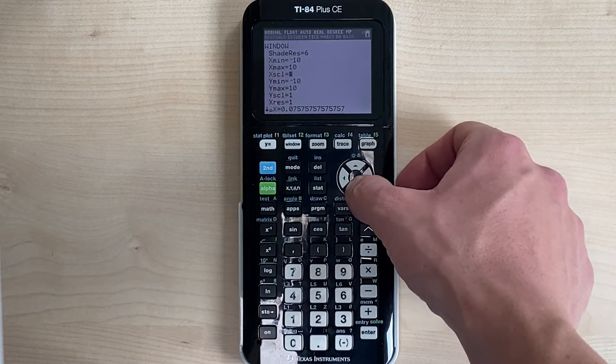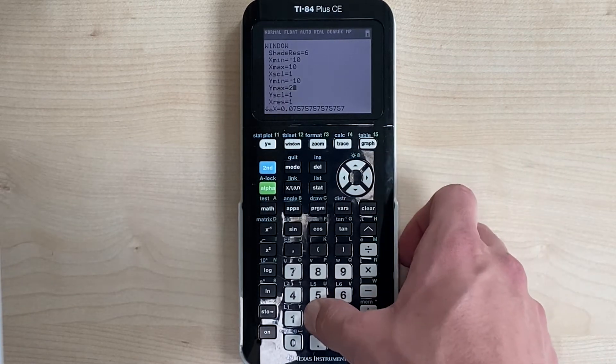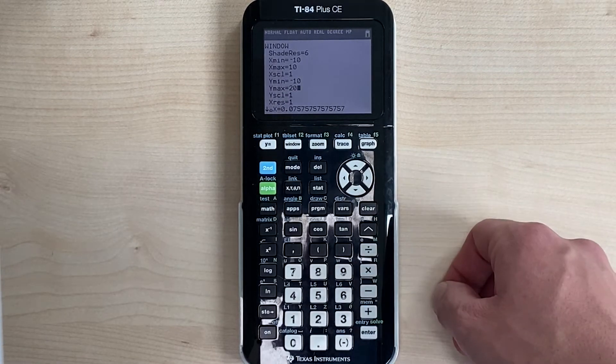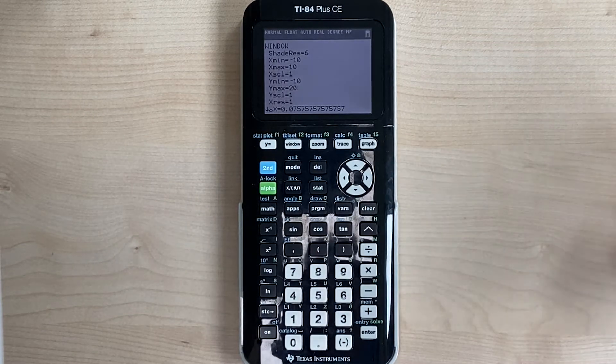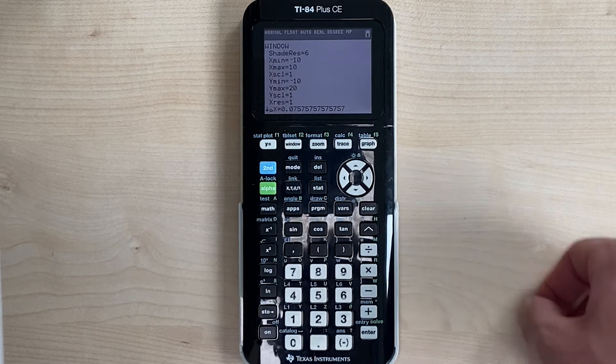So let's go down. Right now, y-max is at 10. Let's just make it 20 and see if that shows us our vertex. If it does, great, we're done. If it doesn't, we can just repeat the steps and put in a higher number for y-max until we're able to see our vertex.